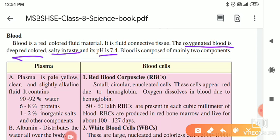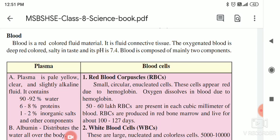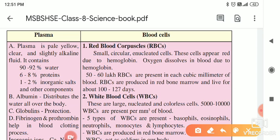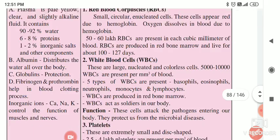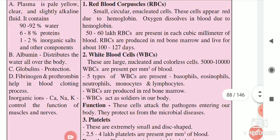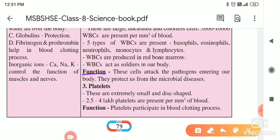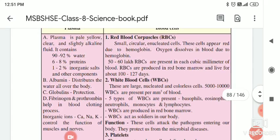Blood is composed of mainly two components. Which are those two components? First, there is blood plasma — that is the liquid part. And the second is blood cells. Blood cells include RBCs, WBCs, and platelets present in the blood. We will see them one by one.